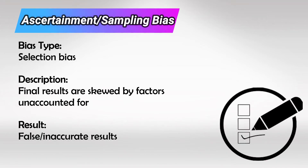Ascertainment bias, which is also known as sampling bias, is when the final results are skewed by factors we did not account for. This again creates non-representative results.